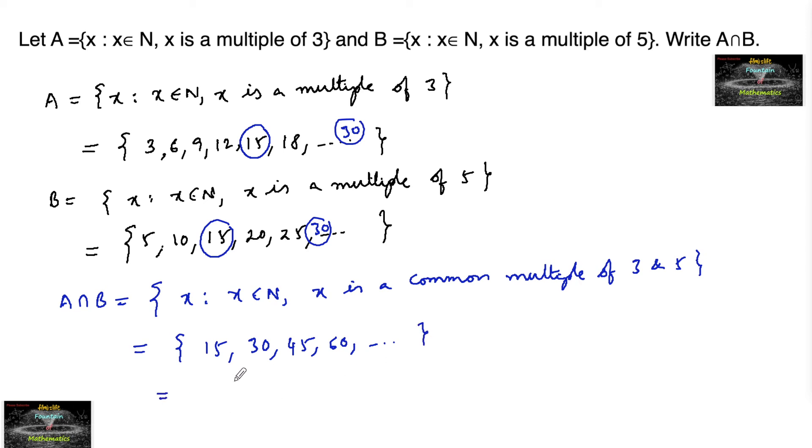This is nothing but LCM of 3 and 5 we can write. X such that x belongs to N and we can write here x is a multiple of LCM of 3 and 5. That's correct.